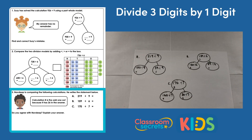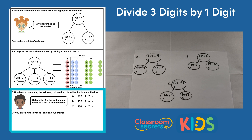Question three: Navdeep is comparing the following calculations and writes the statement: calculation B is the odd one out because it has 26 in the answer. Do you agree with Navdeep? We have three calculations — A, B, and C — and I'm going to solve these using part-whole models, though any method is fine as long as we get the same answers.